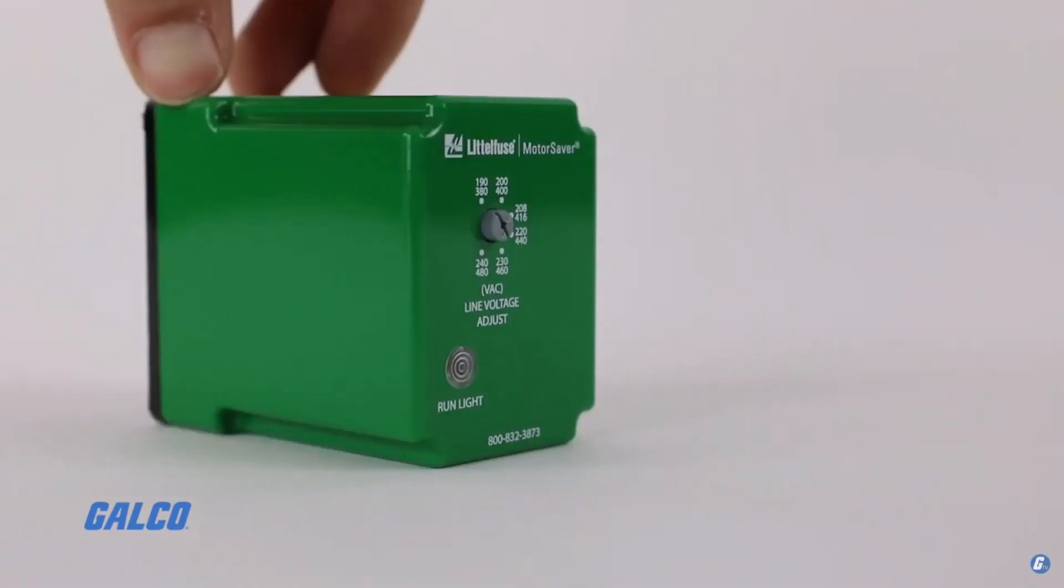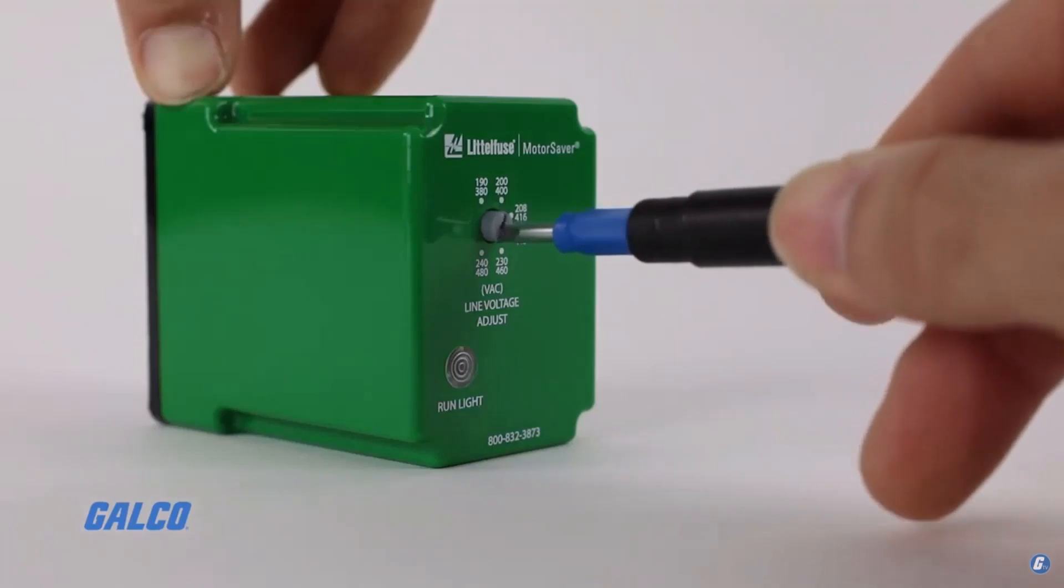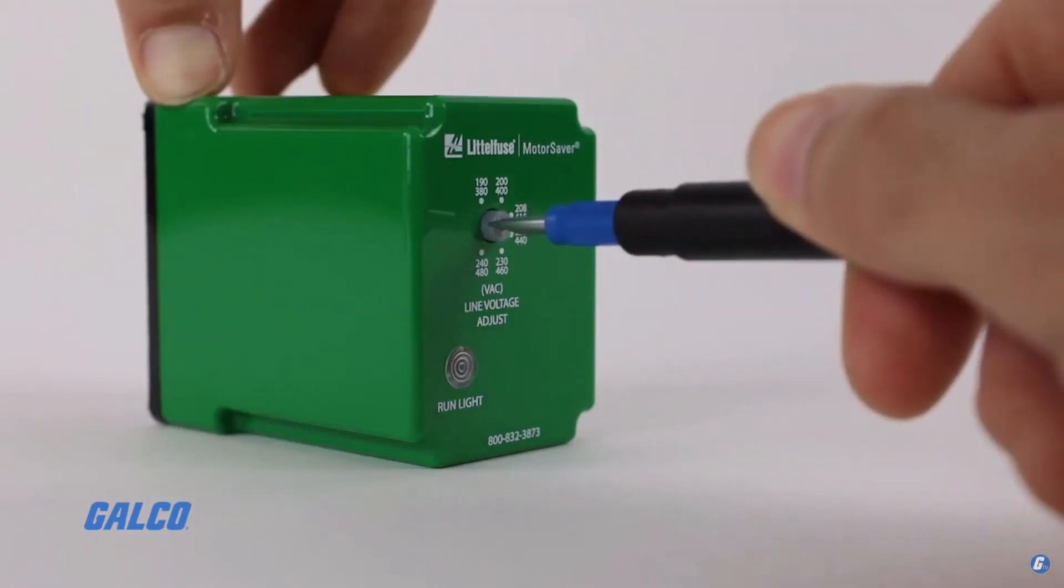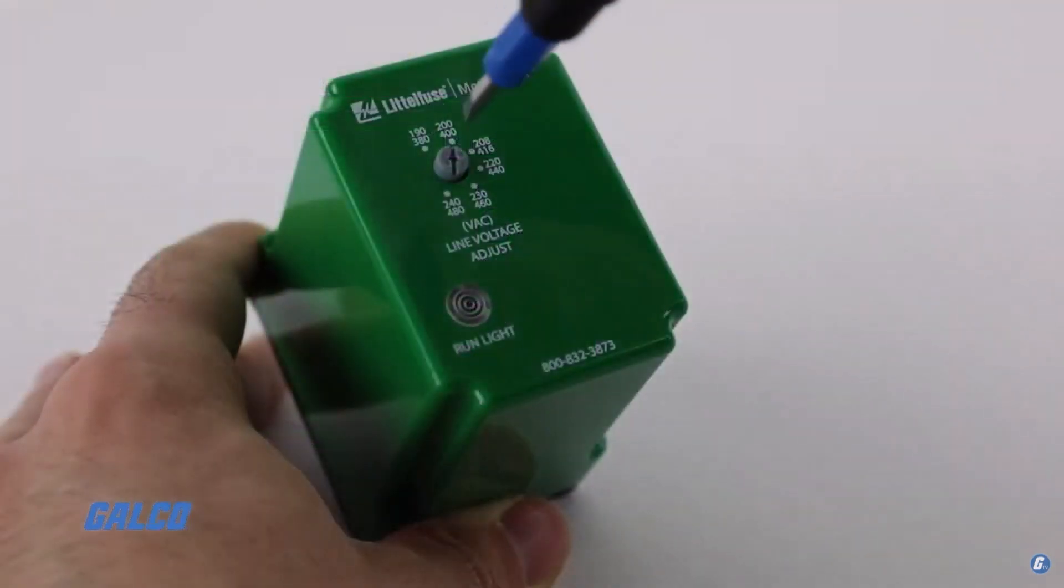Each model has a front-facing potentiometer that allows for line voltage adjustments. Some options have additional potentiometers that operators can use to change the trip delay, the restart delay, and the unbalanced percentage trip.